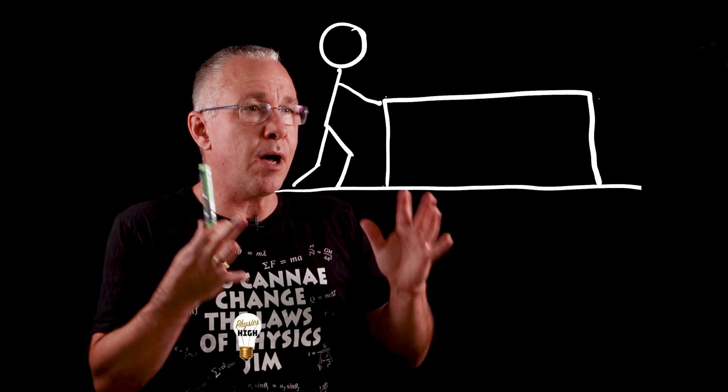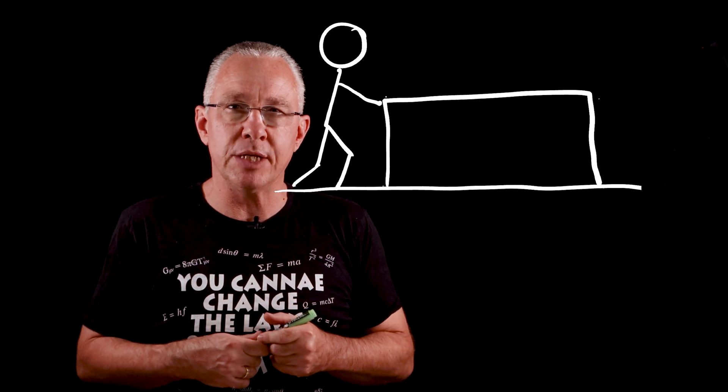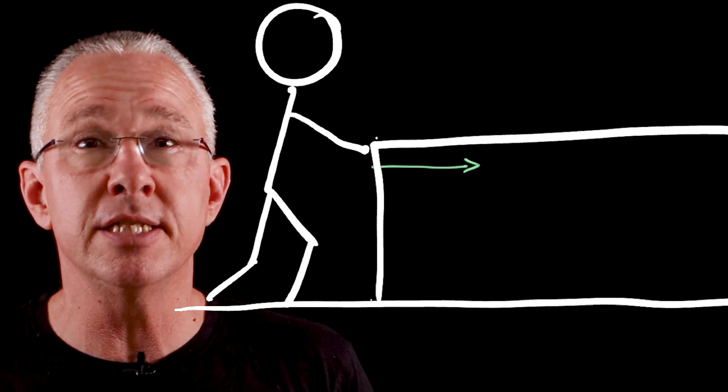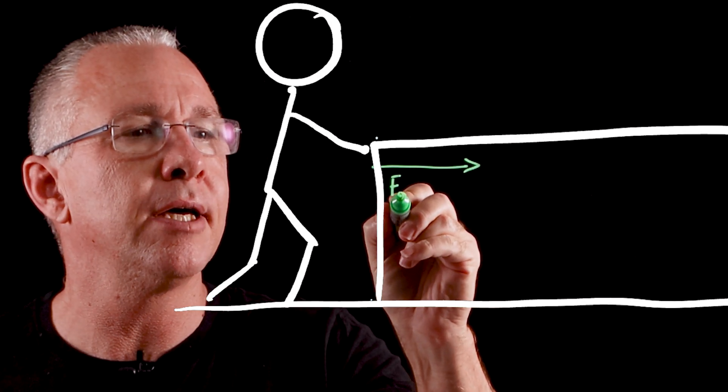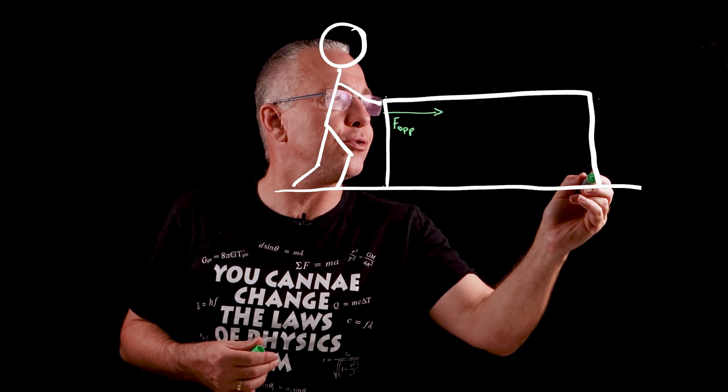Here I have a diagram of a person pushing a box along a rough surface. There are two forces initially we're going to be looking at. The first is this particular force over here which is the applied force and so we're going to call it FAPP. The other force is the force due to the friction.